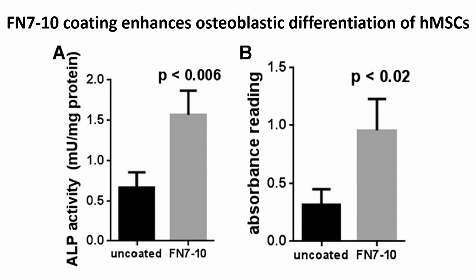They then looked at whether the human mesenchymal stem cells are actually differentiating into bone cells and producing bone markers. Alkaline phosphatase (ALP) is one such marker — an enzyme used in bone formation. On uncoated surfaces there is little ALP activity, whereas on coated surfaces there is much higher ALP activity, which is further quantified.